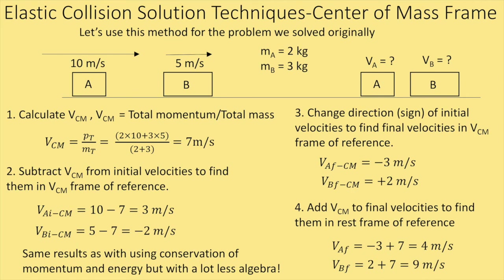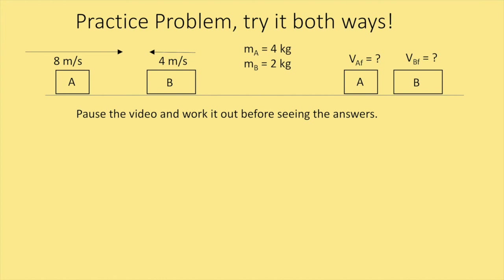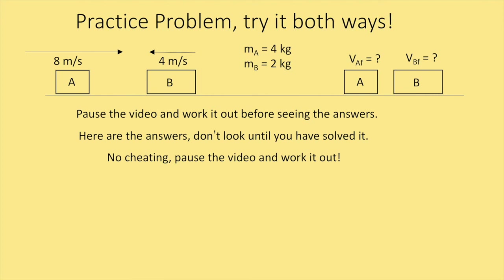Once you learn this technique it goes pretty fast. The hardest part is remembering to calculate the center of mass velocity and what the steps are. I'd recommend you try this yourself — or even better, let's look at a quick practice problem. I've changed the velocities — notice block B is now going to the left, which might trip you up — and I've changed their masses. Pause the video, go back and look at the notes, and figure out the final velocities before I reveal the answers.